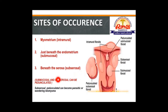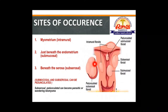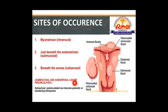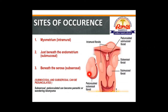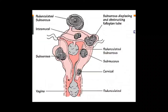An important point: subserosal pedunculated fibroids can become parasitic or wandering leiomyomas. The stalk becomes very thin, the leiomyoma detaches from its original site, wanders in the peritoneal cavity, attaches to another surface, and receives blood supply from that area — at which point it is called a parasitic or wandering leiomyoma.